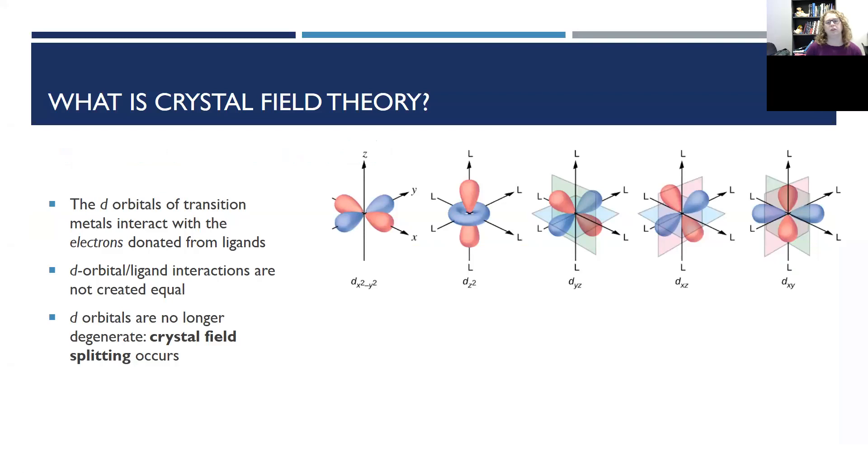So first off, what is crystal field theory? What it's trying to explain are some interesting things that happen when transition metals form bonds with ligands. And the basic idea is that a coordinate covalent bond is formed when the transition metal's d orbitals interact with electrons on the ligands. And what I want to call your attention to is what d orbitals actually look like.